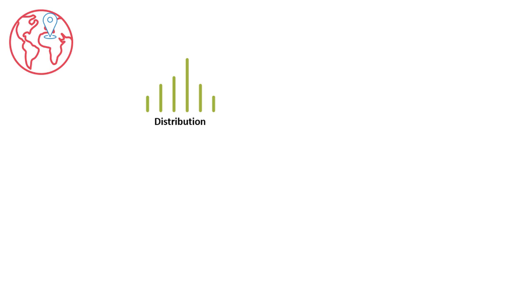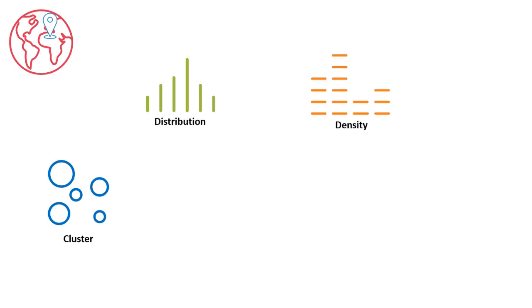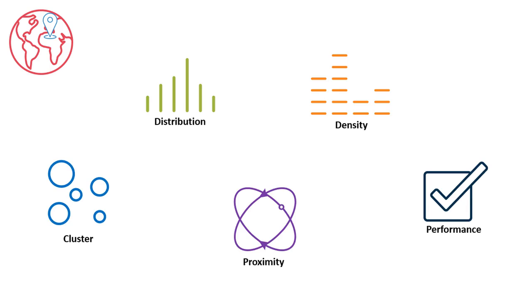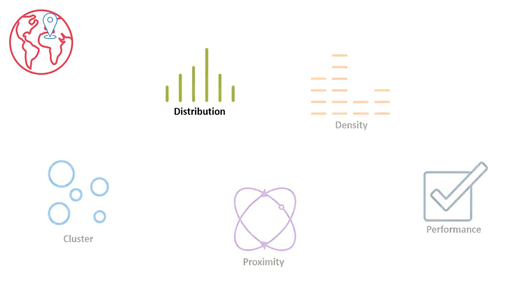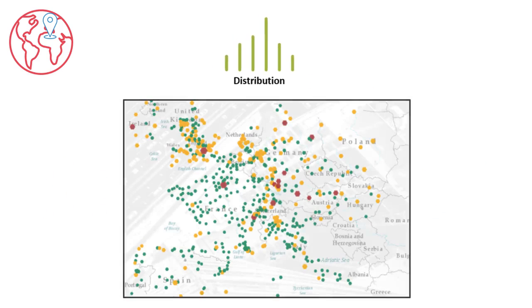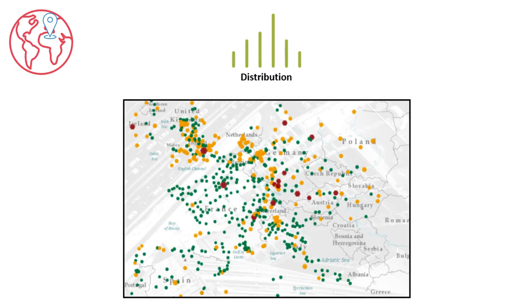Geomaps are a great way to show how location is important to your analysis. You can use geomaps to show distribution, density, cluster, proximity, and performance. In this example, the geomap shows the distribution of commuting workers in Europe.